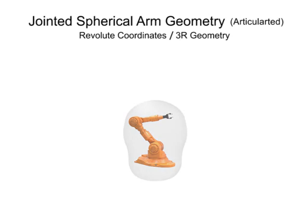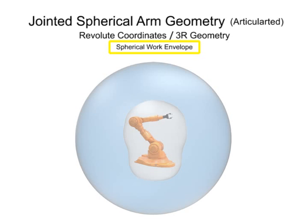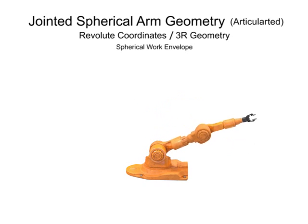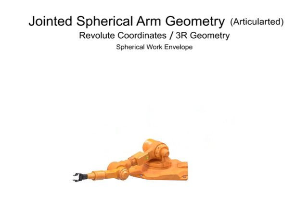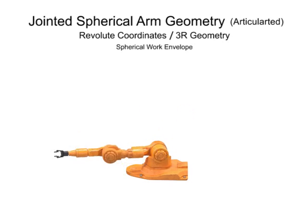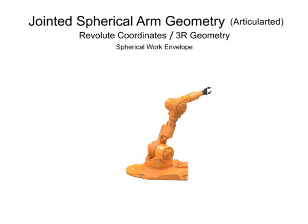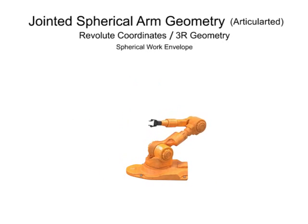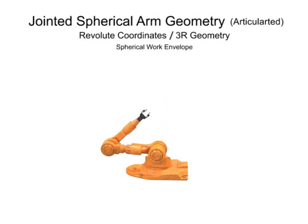Except for very close to the body, the work envelope of a jointed spherical robotic arm is almost entirely spherical. The advantages of this type of work envelope include very deep reach, minimal floor space use, and high positioning mobility of the tool end arm. Due to its mechanical complexity and the complexity of its controller, this robotic arm typically comes with a higher hardware cost and requires skilled technicians.